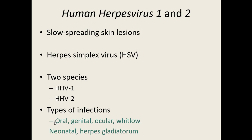HHV-1 and HHV-2 were previously known as the herpes simplex virus. Human herpes virus 1 generally causes issues above the waist — skin lesions above the waist — and human herpes virus 2 generally causes skin lesions and issues below the waist. That doesn't mean they can't go to another part of the body, but HHV-1 generally tends to cause lesions above the waist.